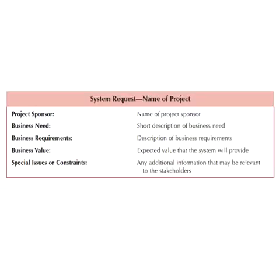The document that comes out of a project identification is called a system request, and it contains five elements: the identification of a project sponsor and the business needs.